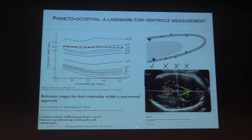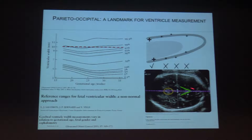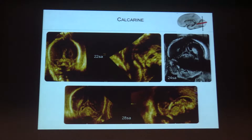The parieto-occipital fissure is an important anatomical landmark because it enables the measurement of the ventricle. To be sure that you have an enlargement of the ventricle — ventriculomegaly — you need to provide this axial plane and place your measurement just in front of the parieto-occipital fissure. This is the first very important fissure to highlight.